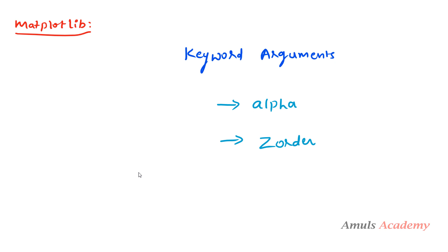Hello guys and welcome to Python programming tutorials by Amul's Academy. We were discussing about the matplotlib package, and in the previous tutorial we discussed about keyword arguments in the plot function. Today we are continuing that discussion, focusing on the alpha and zorder arguments.